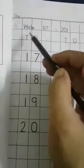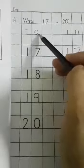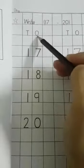Day and date on the top of the page, then write 17 till 20. T and O means tens and ones.